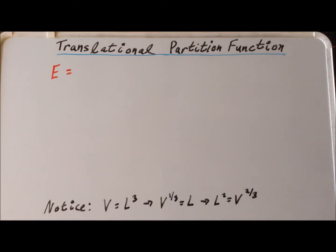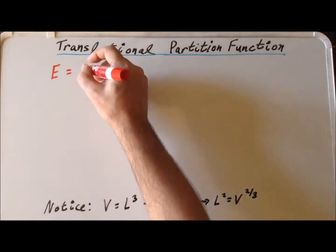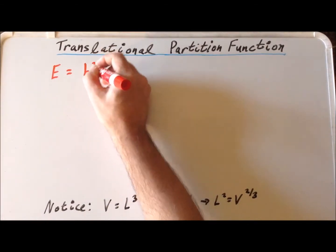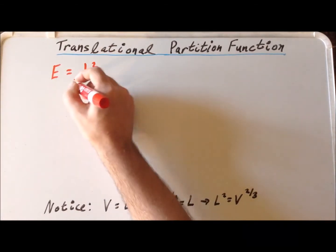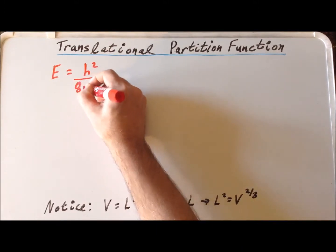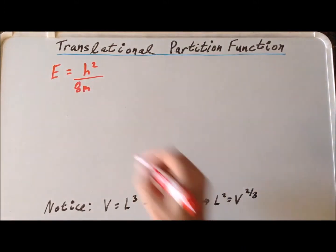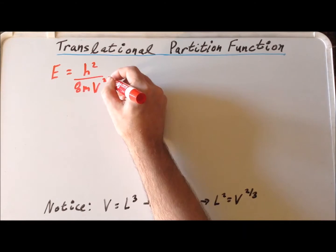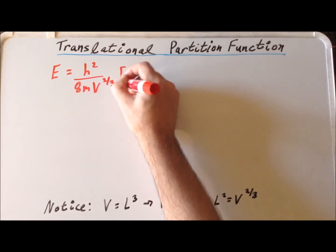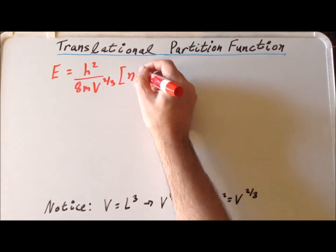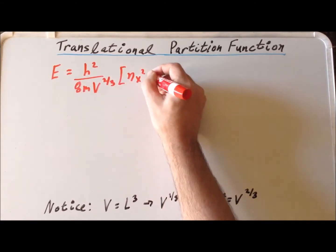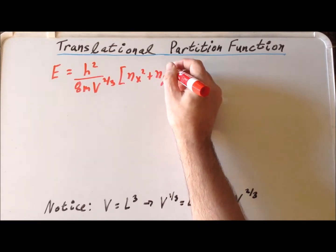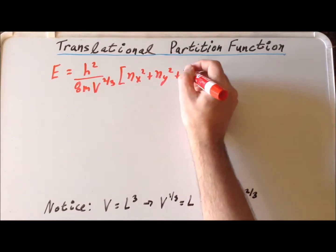After these manipulations, the energy of translational motion becomes h squared over 8 times m times V to the two-thirds power, times the quantity n_x squared plus n_y squared plus n_z squared.